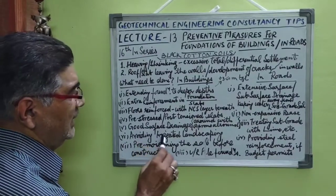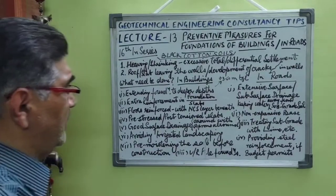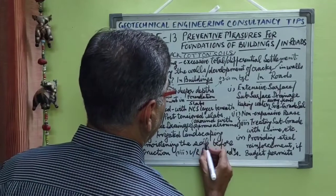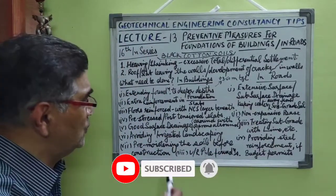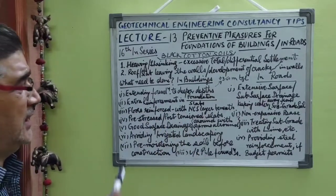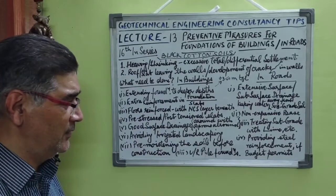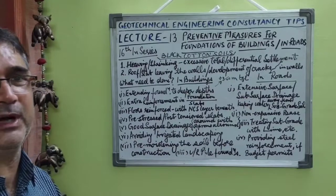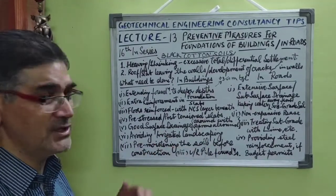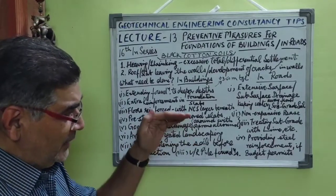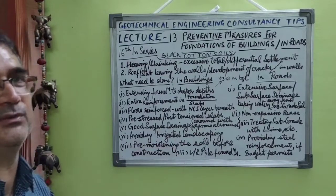We must necessarily avoid irrigated landscaping in these kinds of soils. Pre-moistening of the soil can also be done before construction in order to counter its shrinkage and swelling properties, so that our structure remains safe. The best solution for such kinds of soils is the construction of under-ream pile foundations, because the under-ream bulb increases the load-bearing capacity as well as counteracts the swelling properties of the soil.